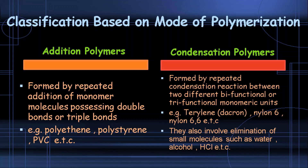Classification based on mode of polymerization gives us addition polymerization and condensation polymerization. In addition polymerization, polymers are formed by repeated addition of monomers containing only multiple bonds (double or triple bonds). In condensation polymerization, reactions between bifunctional or trifunctional polyfunctional groups take place, releasing H₂O, and the polymer is continuously formed in this way.